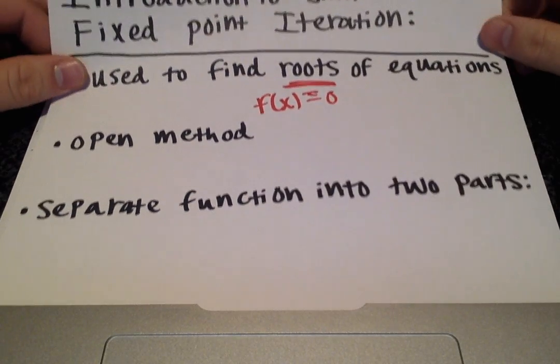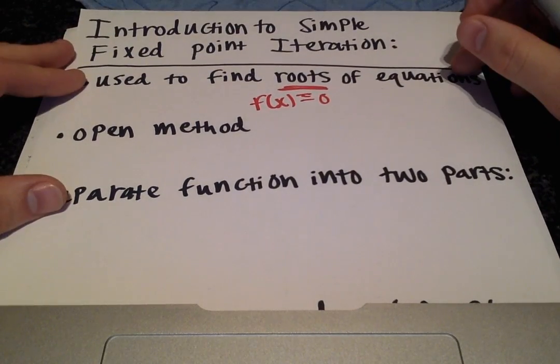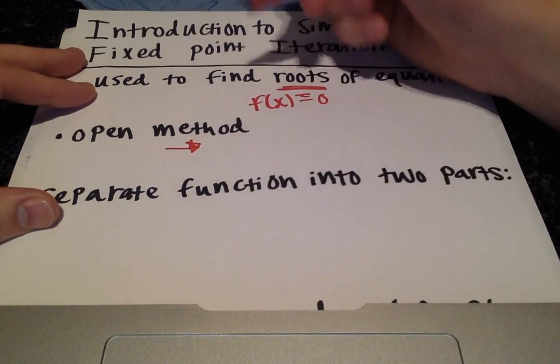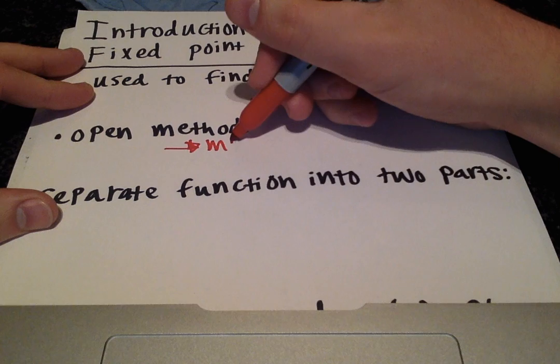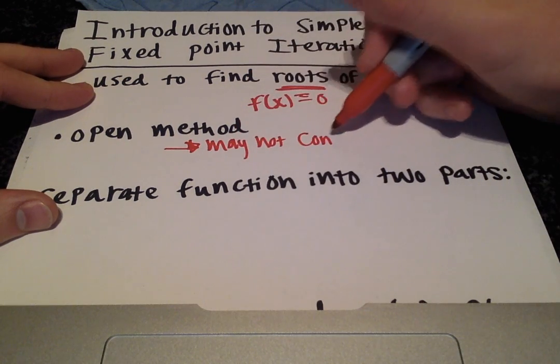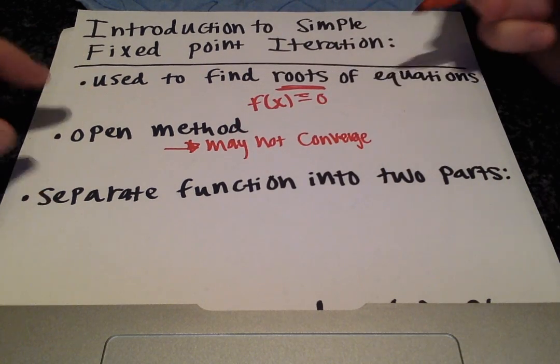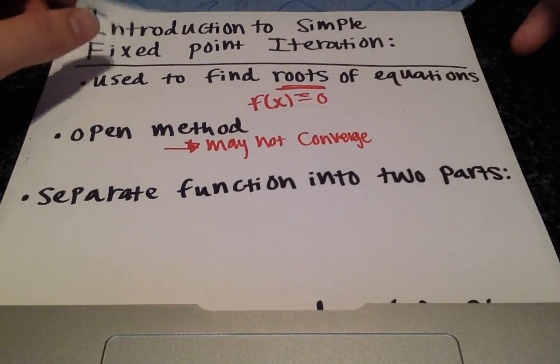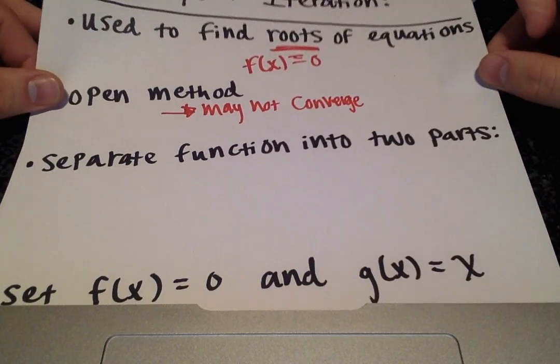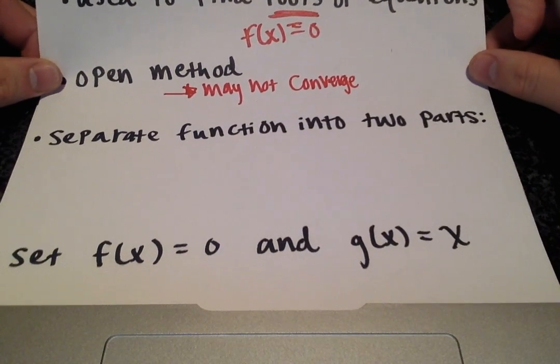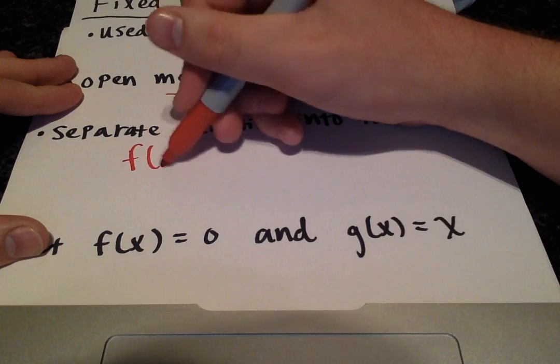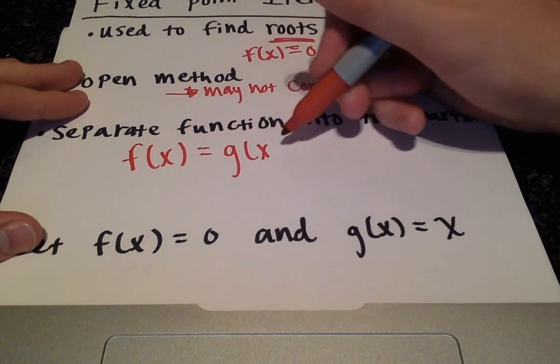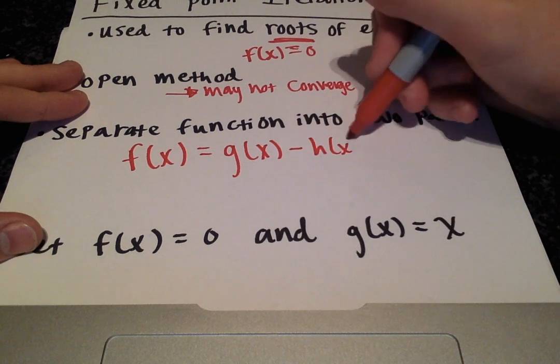The simple fixed point iteration method is an open method, which means we may not converge. Closed methods do converge, but open methods are not guaranteed to converge. For simple fixed point iteration, we're going to separate our function f(x) into two parts.